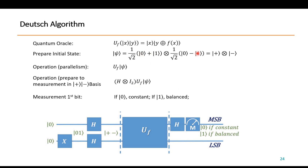We create a plus and minus state, a superposition of 0 and 1 in a special format. With this superposition we pass the wave function into the quantum oracle, which performs computation in parallel. Then we do a measurement in the plus-minus basis using the Hadamard gate. Due to constructive and destructive interference, if the output is 0 the function is constant; if the output is 1 it is balanced.